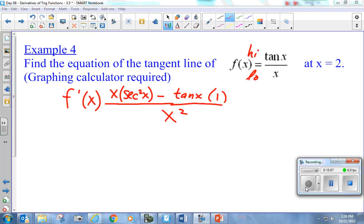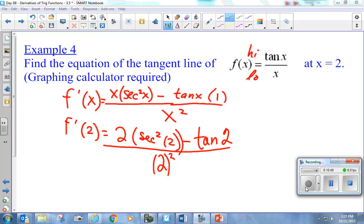So, I take what's below and I square that. That is the derivative. That's the derivative of f of x. Now, they want to know at 2. It's 2 times secant squared of 2 minus the tan of 2 all over 2 squared.